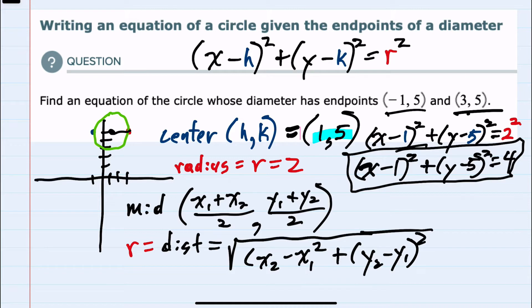And if these endpoints would have been more complicated, not on a horizontal or vertical line that made it easy for me to find the midpoint and the radius, just note that we could have used the midpoint formula and the distance formula to find those two values to plug into the standard form of the equation for a circle.